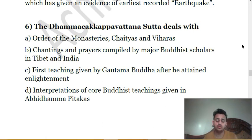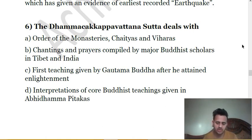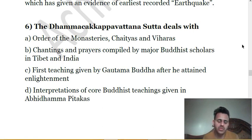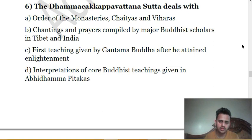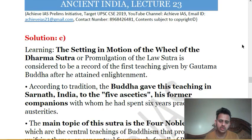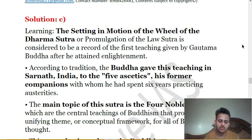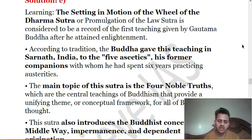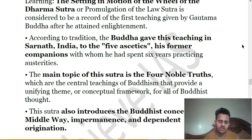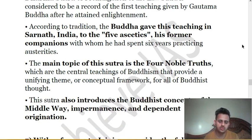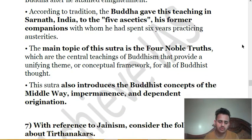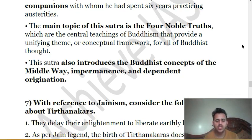This teaching was given by Gautam Buddha in Sarnath after achieving enlightenment in Bodh Gaya. He moved to Sarnath where he delivered his first lecture to five monks with whom he had earlier lived. That event is called Dhamma Chakka Pavattana Sutta — the setting in motion of the wheel of Dhamma. The main topic of this sutra is the four noble truths, and it also introduces the Buddhist concept of the middle way, impermanence, and dependent origination.